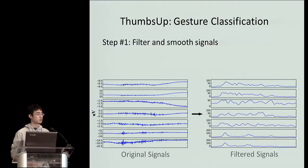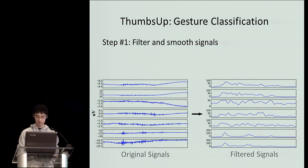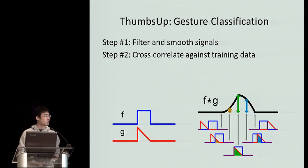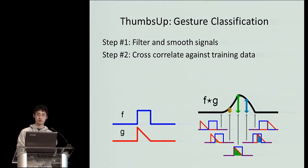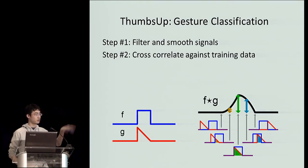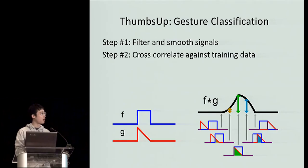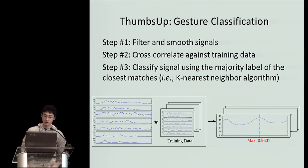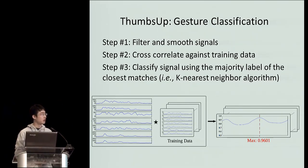To classify the EMG input signals into the corresponding gestures, ThumbsUp first filters and smooths the incoming signals. Then the filtered signals are cross-correlated against training data, which are previously recorded samples of the user performing left and right swipes, taps, etc. Cross-correlation essentially measures the similarity between two signals, so by cross-correlating the filtered signal against training data, we figure out how well the input signal matches against every training data point. Then we look at the five closest matches and use their majority label as the classification of the input.